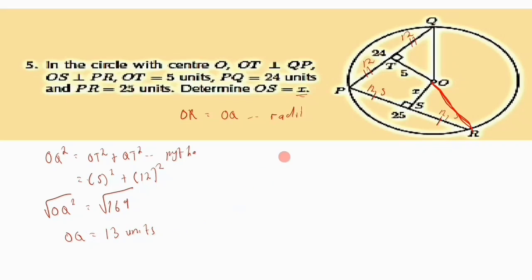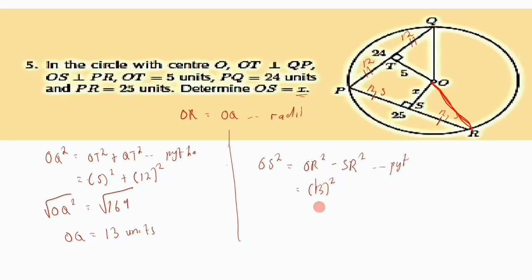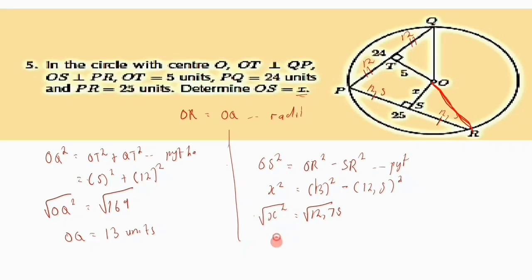Now calculating OS = x using right-angle triangle OSR: OS² = OR² − SR² = 13² − 12.5² = 169 − 156.25 = 12.75. Since OS = x, squaring both sides gives x = √12.75 = 3.57 units.